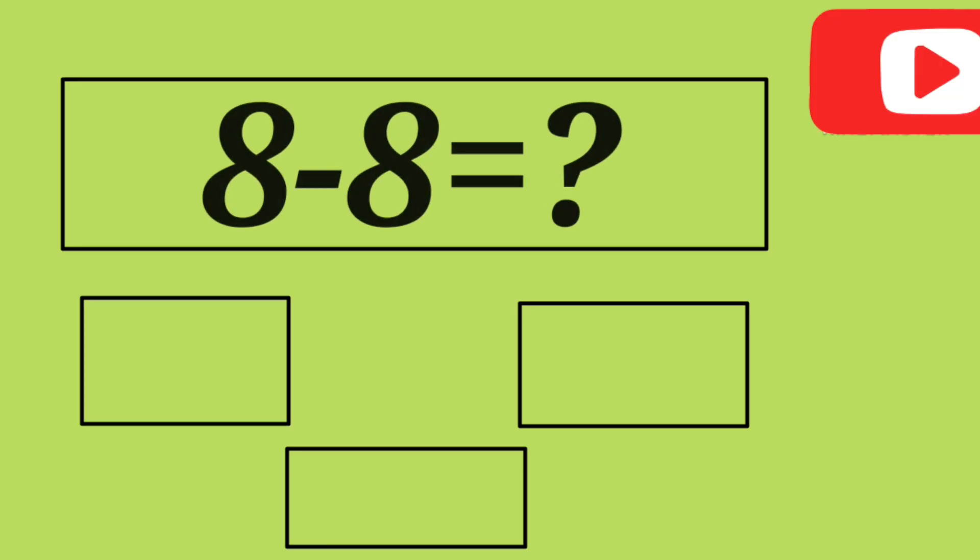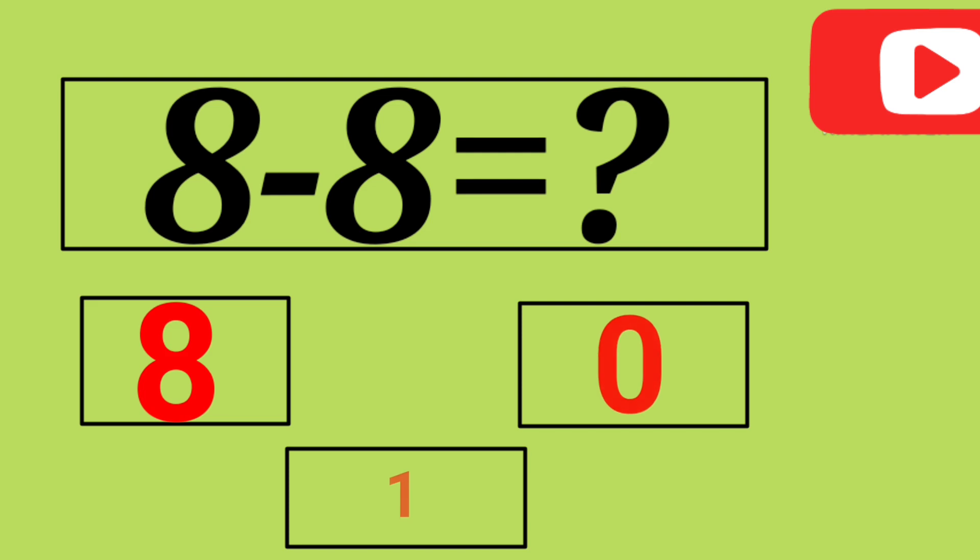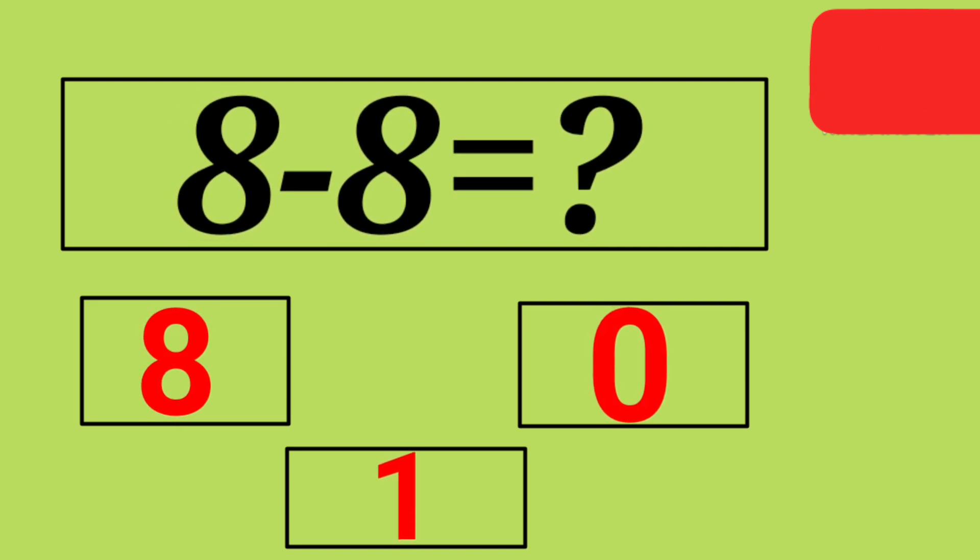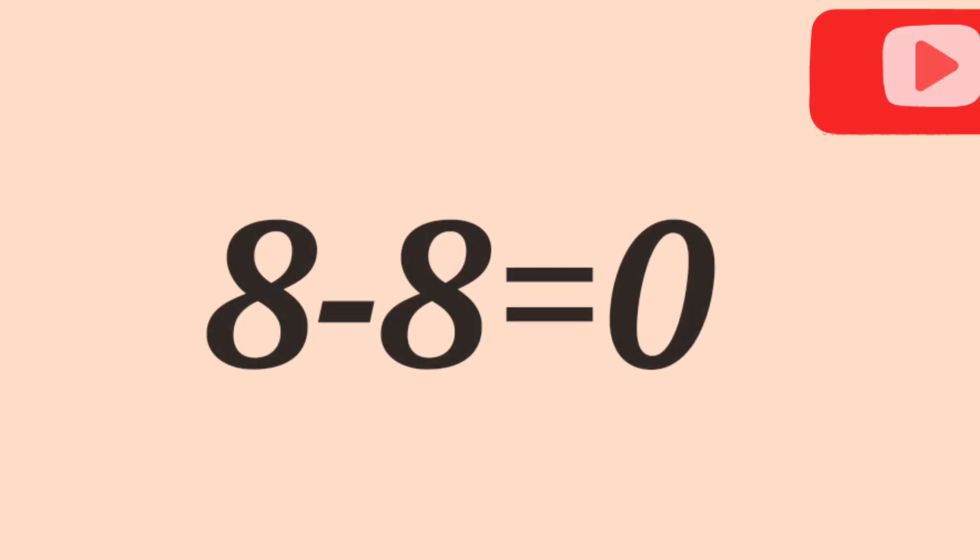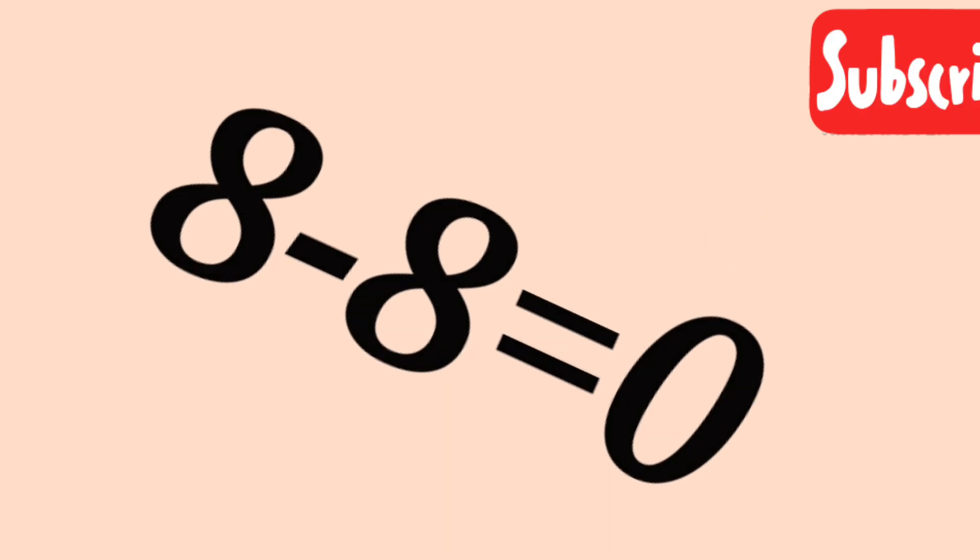8 minus 8 is 8, 0, 1! Yes! 0! 8 minus 8 is 0!